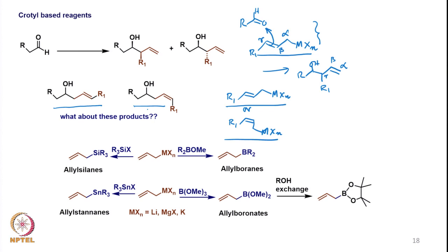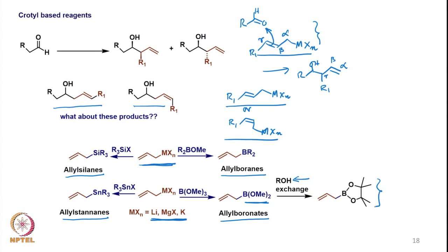Now there are many other substrates which are very important, such as allylsilanes. If we have an allyl-MXn bond and react with chlorotrimethylsilane or any other silyl halide or triflate, then we can get the allylsilane. If we react with R2-B-OMe, we can get the corresponding allylboranes. If we react with trimethoxyborane, we can get the allylboronate. And if we react with tin-X, then we can get the allylstannane. So we have allylboranes, allylboronates, allylstannanes, and allylsilanes, where lithium, magnesium, or potassium is generally used as the starting metal.